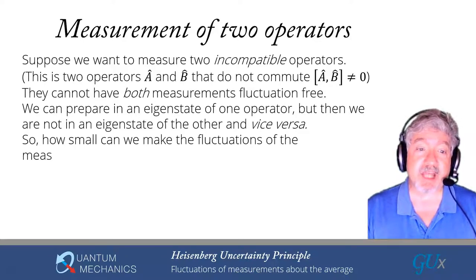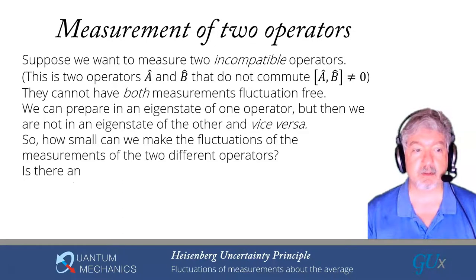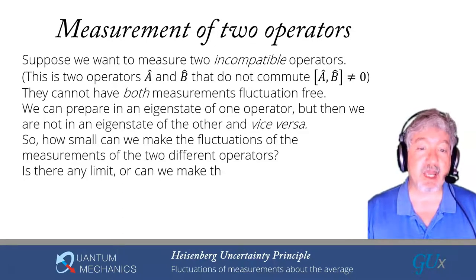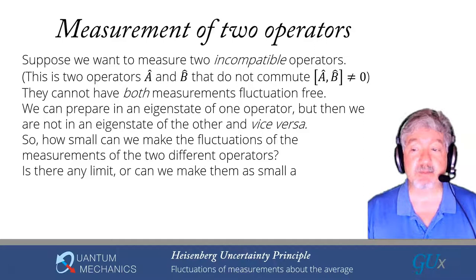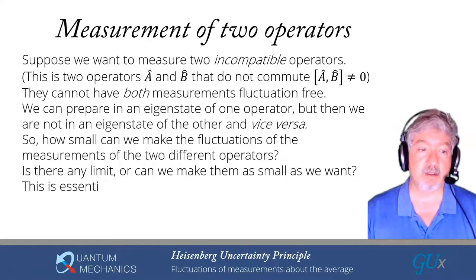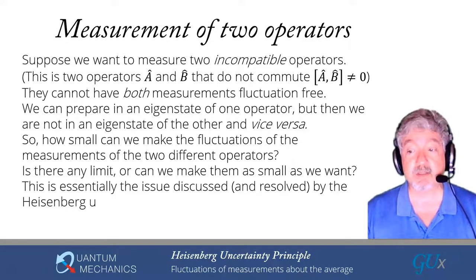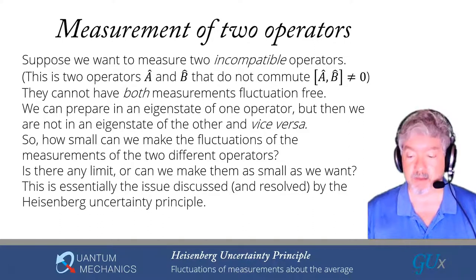A related question is: how small can we make the fluctuations of the measurements of these two different operators if we vary the state that we prepare the system in? Is there any limit to how small we can make it? This question is essentially the issue discussed and ultimately resolved by the Heisenberg uncertainty principle.